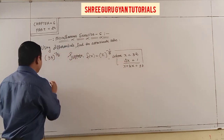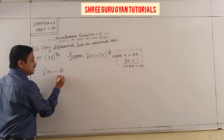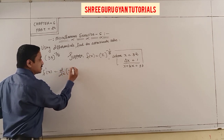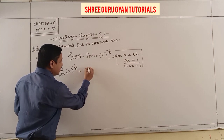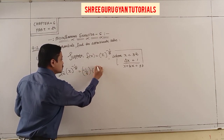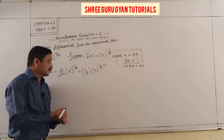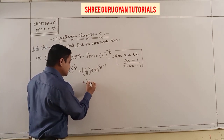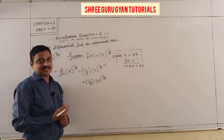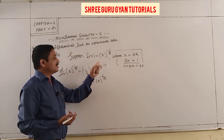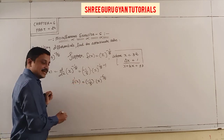Apply the derivative: f'(x) = d/dx of x^(1/5) = (1/5)·x^(1/5 - 1) = (1/5)·x^(-4/5). Wait — actually this is x^(-1/5), so f'(x) = (-1/5)·x^(-1/5 - 1) = (-1/5)·x^(-6/5).